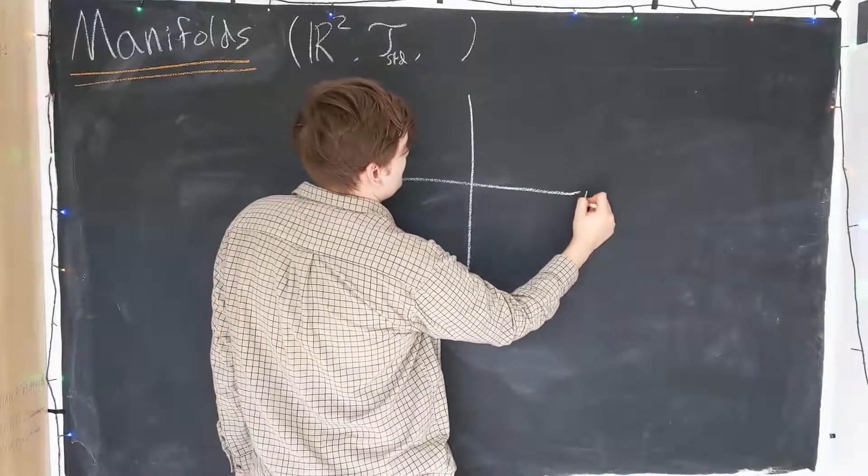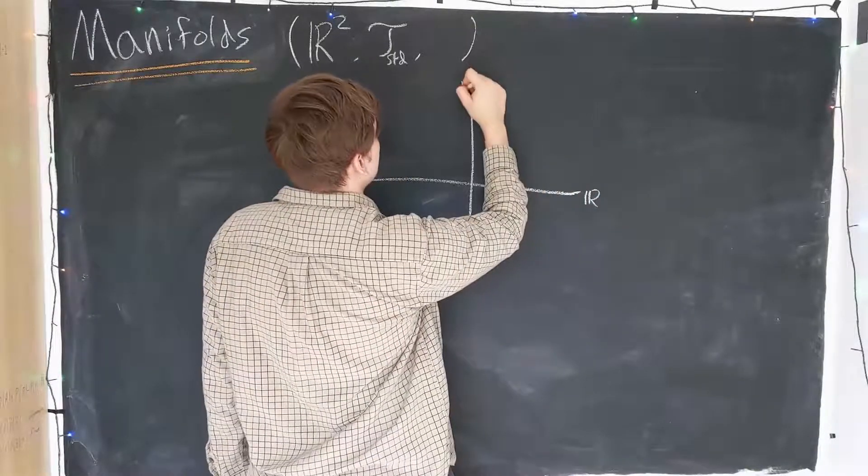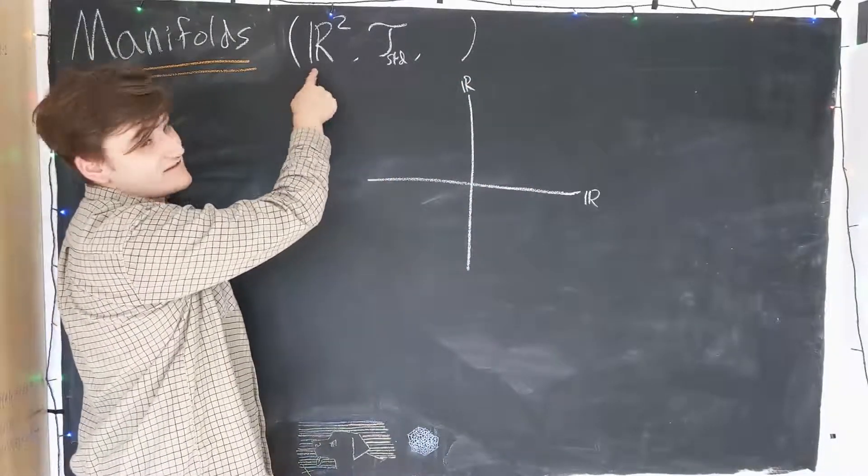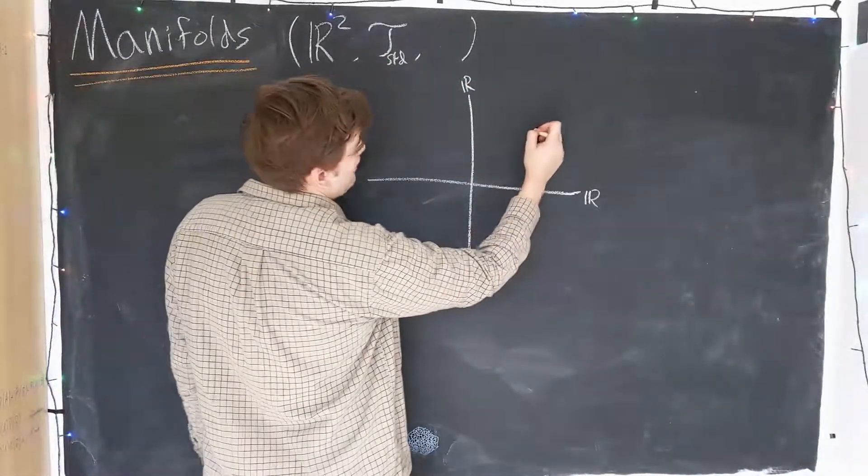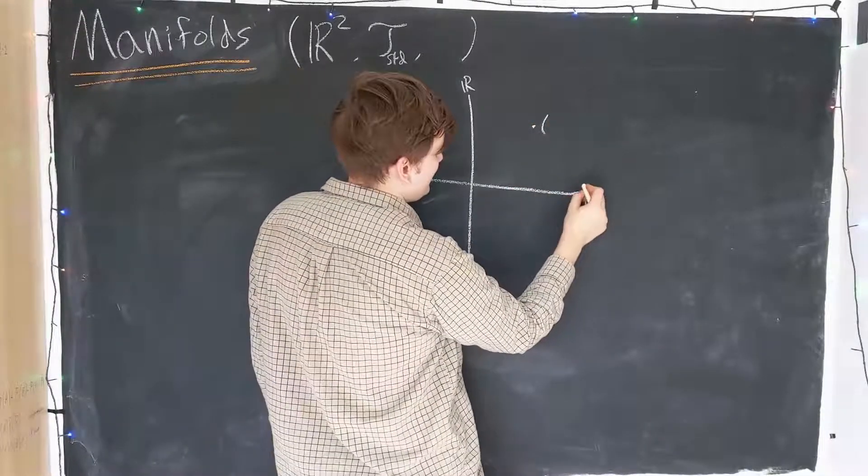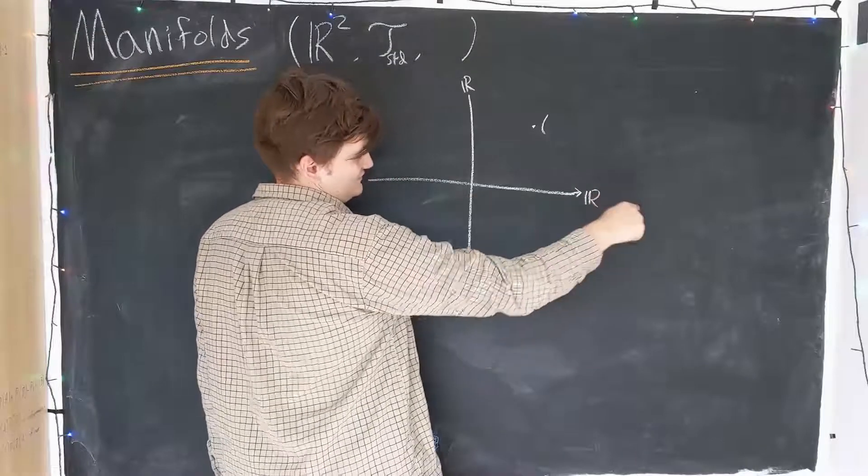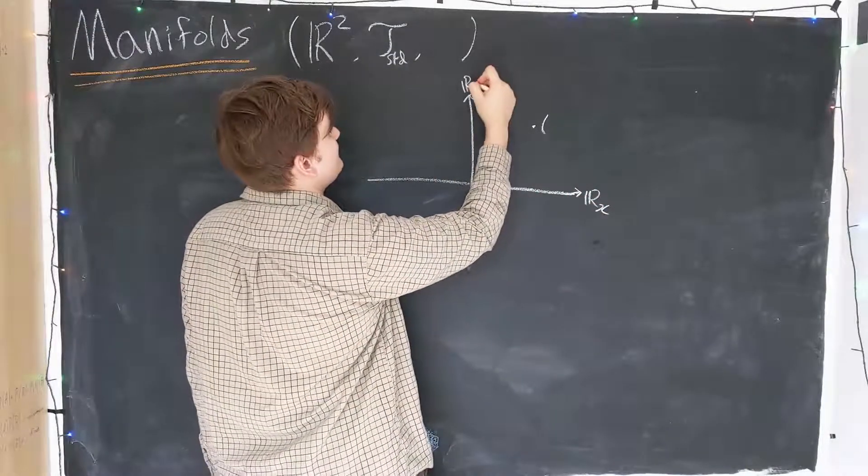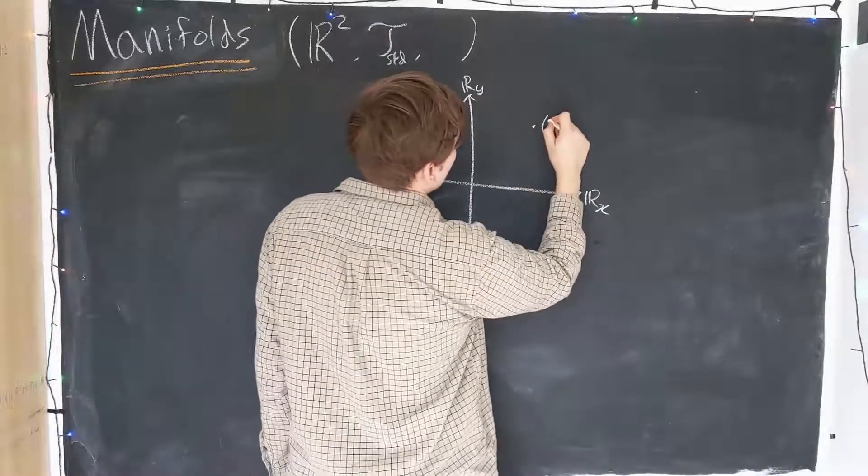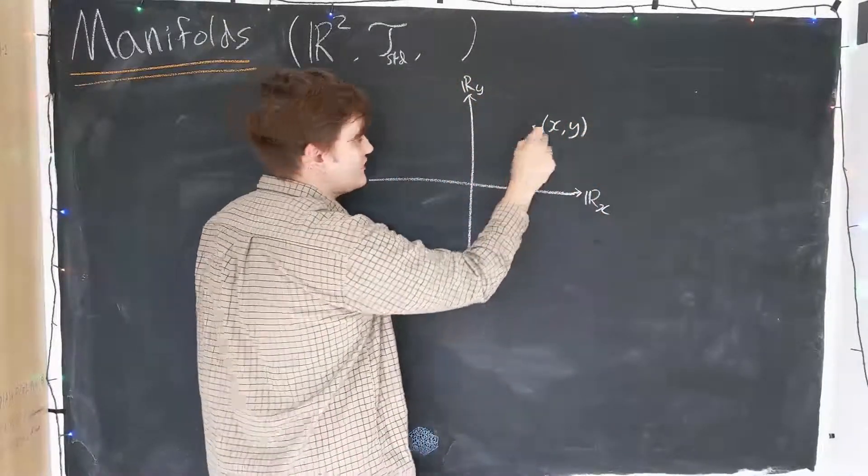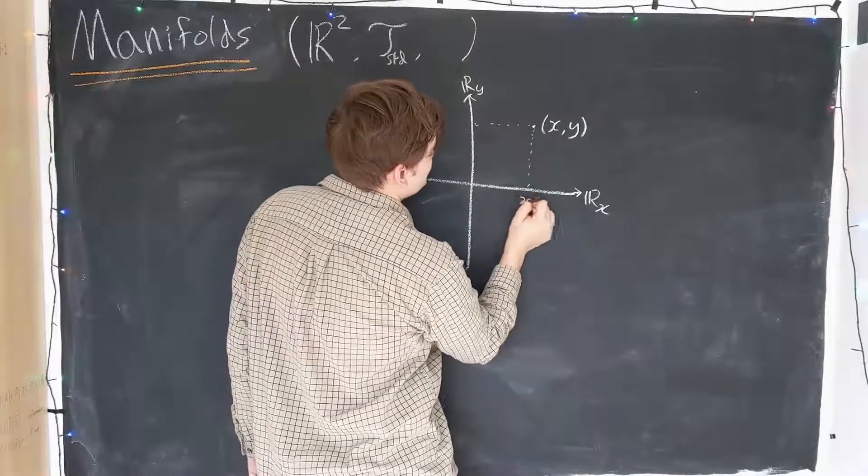Well, it's simply two real lines, since we know the elements of this set, it's a Cartesian product, are just points. And now I'm going to call the elements of this first line x, and the other line I'll label them as y. So points in this set are these pairs of numbers, x and y.